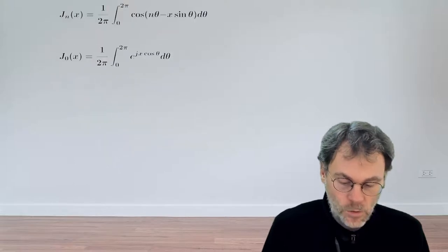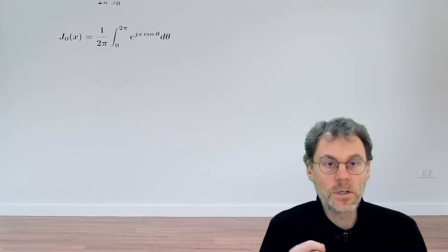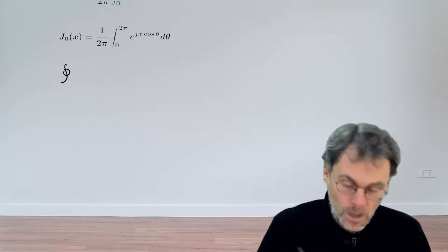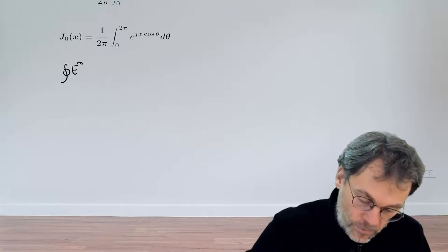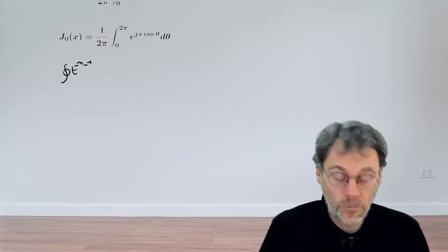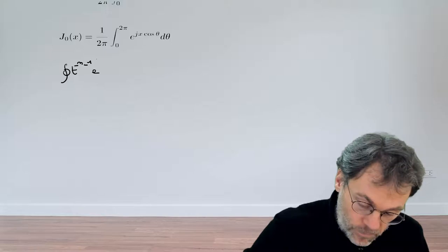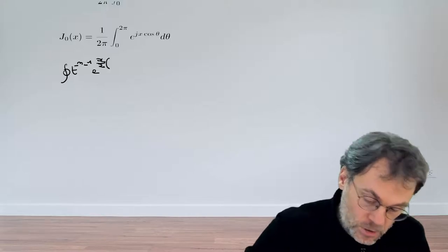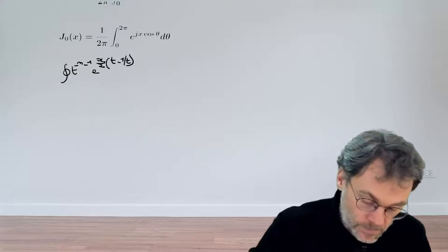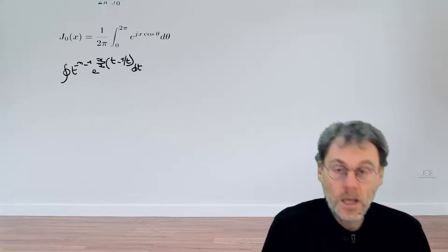Let's have a look at our integral. The integral is an integral over the unit circle of t to the power of minus n minus 1. And then we multiply by the generating function, which for the case of Bessel functions is exponential x over 2 times t minus 1 over t, dt.